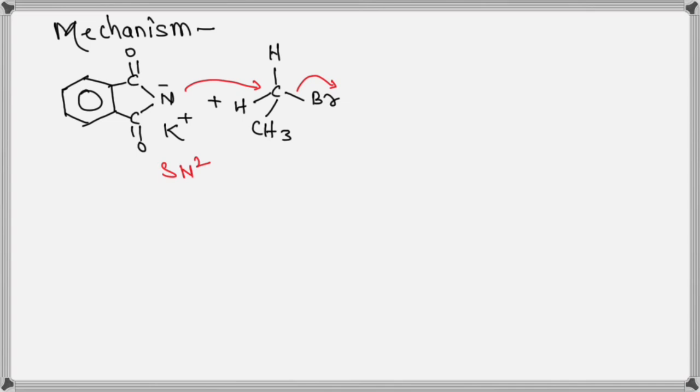When potassium salt of phthalimide is treated with alkyl bromide, this nitrogen which is carrying negative charge attacks from backside to the carbon carrying bromine, and bromine goes out, and this reaction goes in this way.